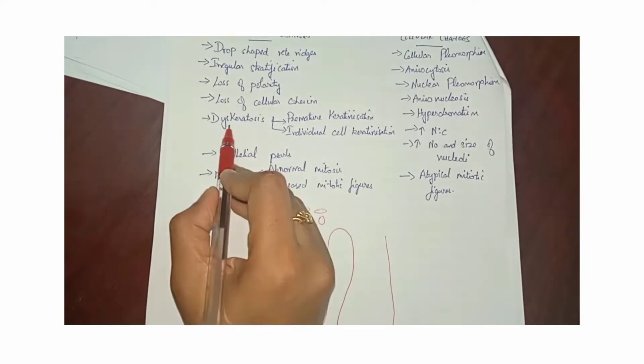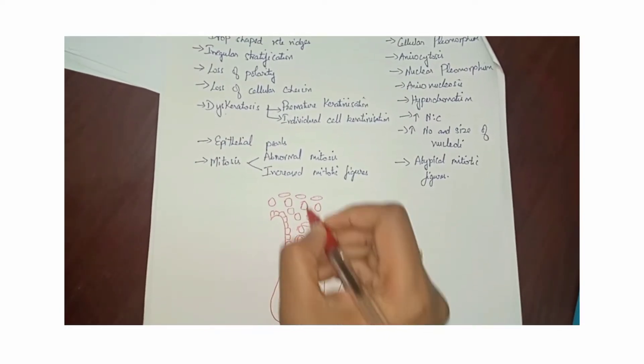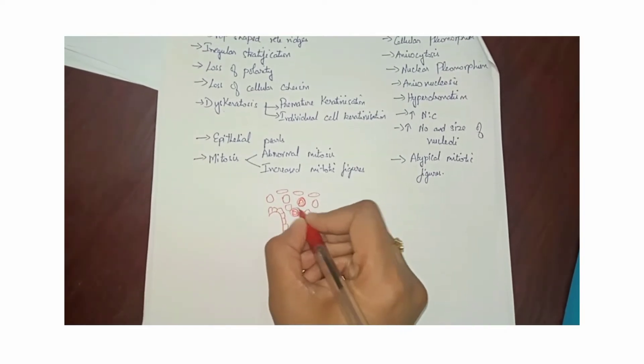Then the next feature is dyskeratosis. So there is going to be premature keratinization and also individual cell keratinization.